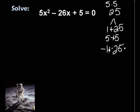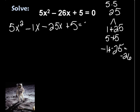So now let's rewrite it: 5x² - 1x, or just -x, minus 25x plus 5 equals 0. Now look at -1x minus 25x—that's my negative 26x, so we really haven't changed it. I look at my first two and I say what's in common with my first two? That's right, an x. So I have x times (5x - 1).